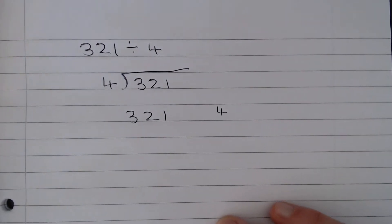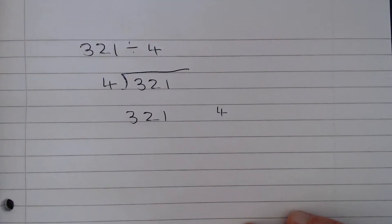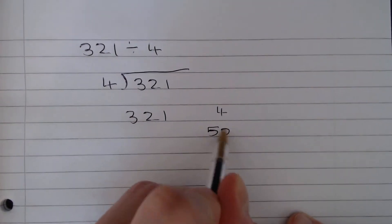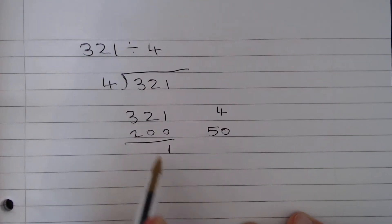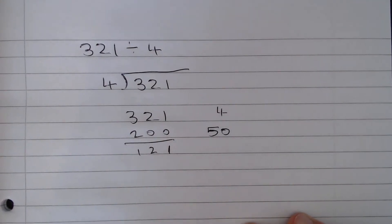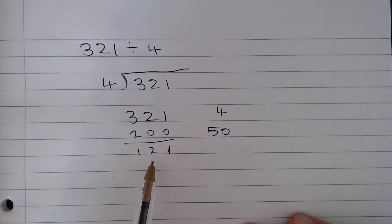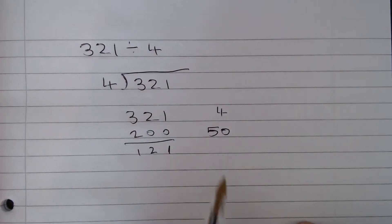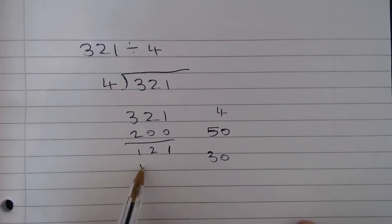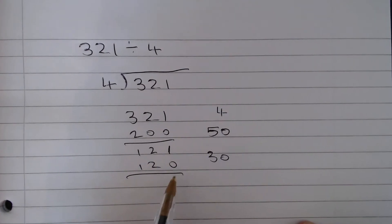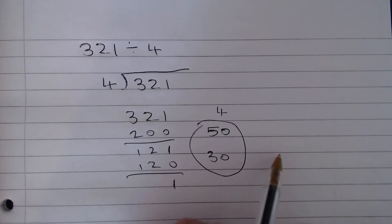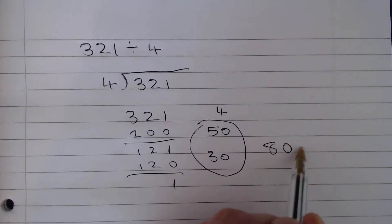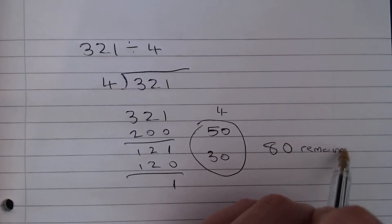I know that 5 fours are 20, so 50 fours are obviously 200. I'll make a note that that's 50 and this is 200, and we're going to take these away from each other — that gives 121. Now I know that 3 fours are 12, so 30 fours must be 120. Let's subtract that and we're left with 1. Adding these up, we get 80 remainder 1.